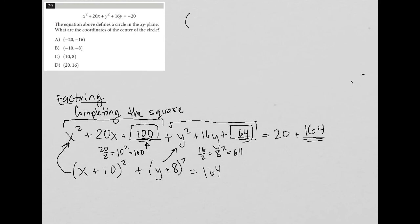We have x plus 10 squared plus y plus 8 squared equals 164. And remember, we're comparing this to x minus h squared plus y minus k squared equals r squared. We're trying to find h and k because that's our center. The question asks for the center of the circle. So x minus h, how do I get from x minus h to x plus 10? That means h must equal negative 10.